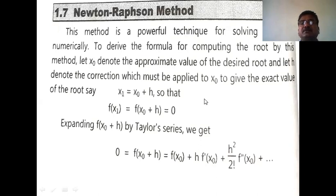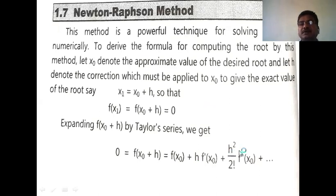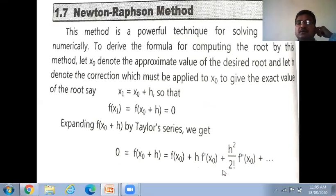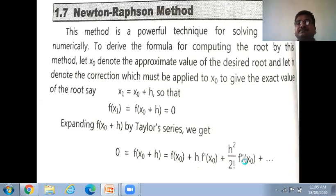h is very small. For example, suppose h = 0.1, then h² = 0.01 and h³ = 0.001. All these terms become smaller and smaller. So neglecting the second-order and higher-order terms of h, we proceed.